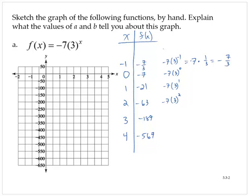And if x was negative 2, we would have negative 7 times 3 to the negative second, which is negative 7 times 1 ninth, negative 7 ninths. Notice how that's fairly close to 0.